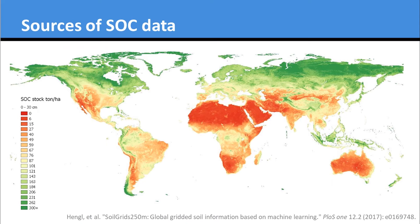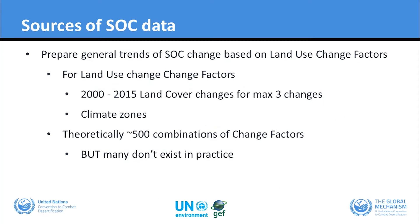Here is a picture of the global soil organic carbon stock, which is the default data for UNCCD reporting. In order to understand how soil organic carbon is changing through time, we also needed to prepare general trends in SOC based on land use change factors. This is a Tier 1 carbon accounting methodology for creation of national accounts via the IPCC. We adapted this method to cover the period 2000 to 2015 specifically for land cover changes, so we are only reporting changes in stock where the land cover has changed, not changes in stock within a land cover.